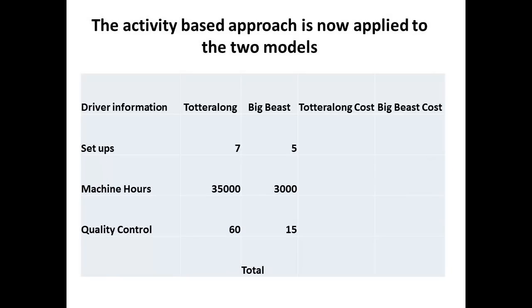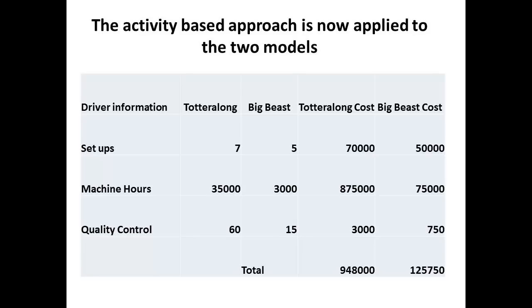To carry out the next step, the managers need to know the number of setups for each model, the number of machine hours, and the number of inspections. We have entered these into our table. This gives us the overhead allocation using activity-based costing. The total overhead for the totter-along moped is $948,000, whilst for the luxury big bike the figure is $125,750.